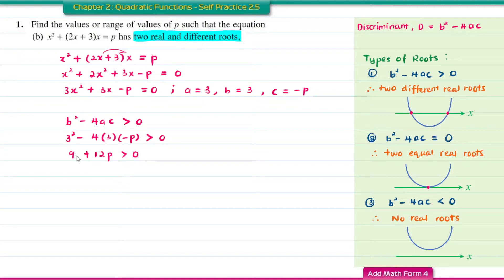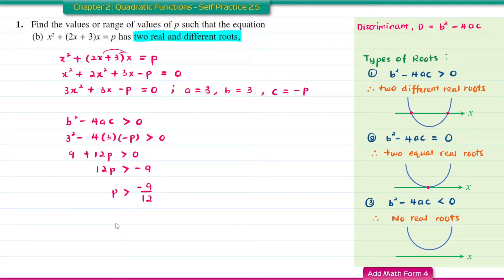Moving 9 to the right-hand side: 12P greater than negative 9, so P is greater than negative 9 divided by 12. Simplifying, P is greater than negative 3 over 4.